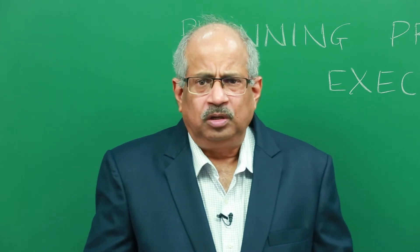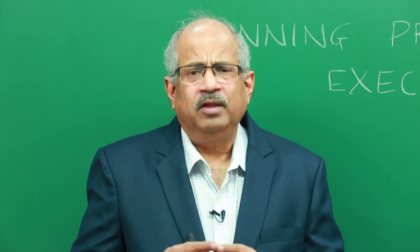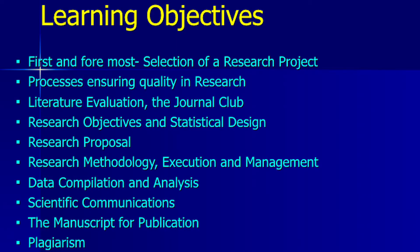From the literature, you could judge or decide what kind of research proposal you would be doing. Once you know the topic and subject for your research, then you have to design research objectives, set up a few research objectives, and then make a statistical design around the research objective to prove or disprove your objective.